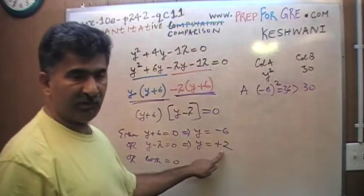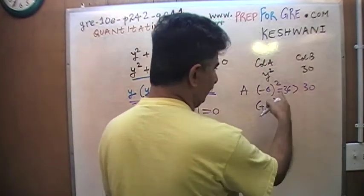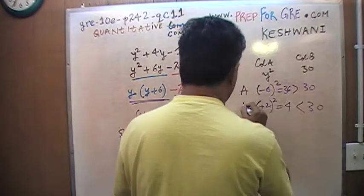On the other hand, if y turns out to be positive 2, positive 2 squared is 4, which of course is less than 30. The answer in this case would be B.